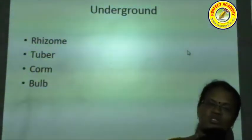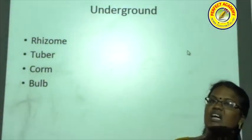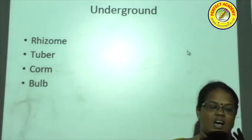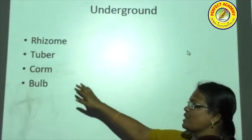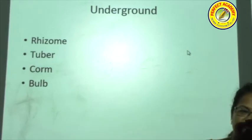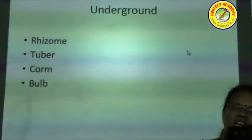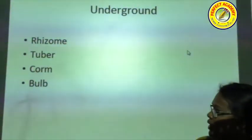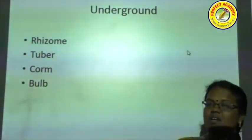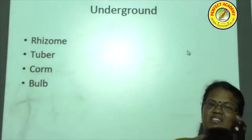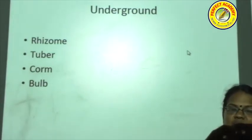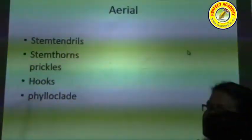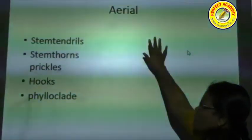Corm is a vertical underground stem — examples are Colocasia (chenai kilangu) and Alocasia. Next is the bulb: two key examples are Allium cepa (onion) and Allium sativum (garlic). The peculiar feature of the bulb is the possession of scaly leaves, as seen in onion, which provide protection.